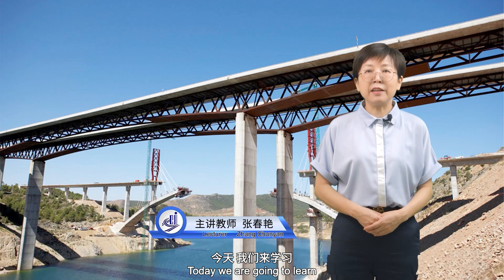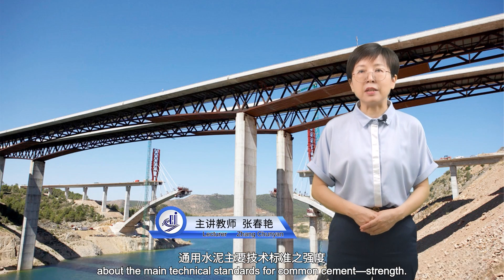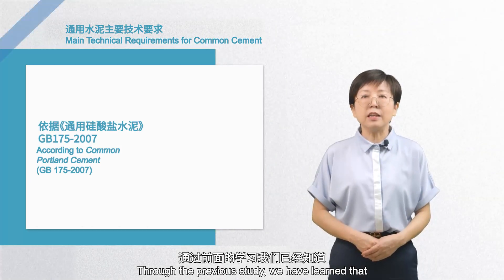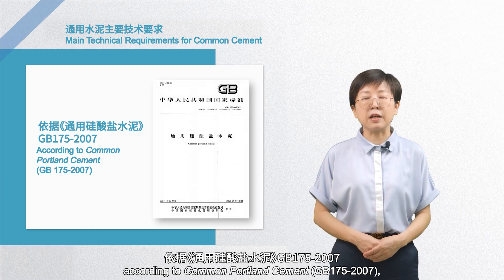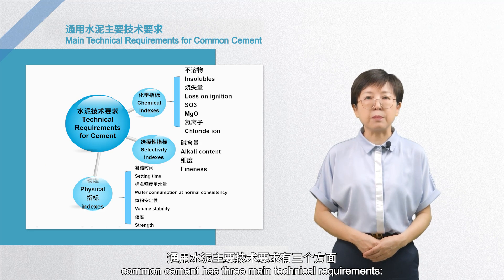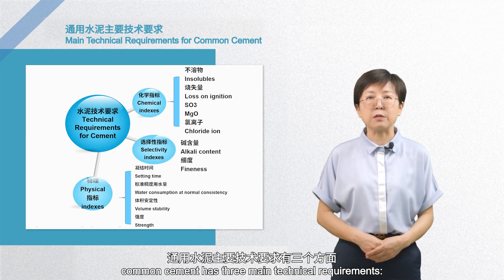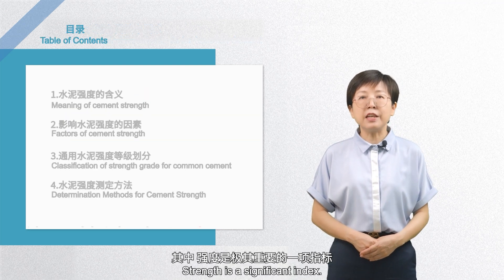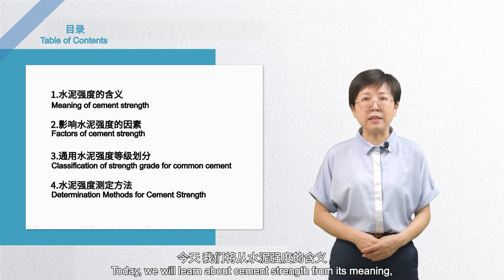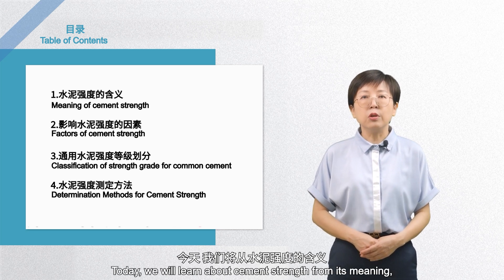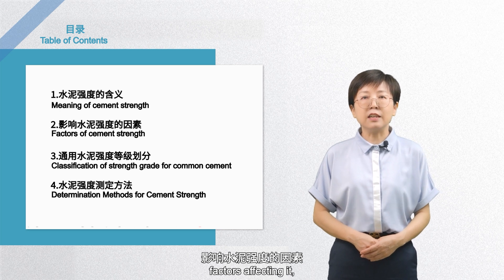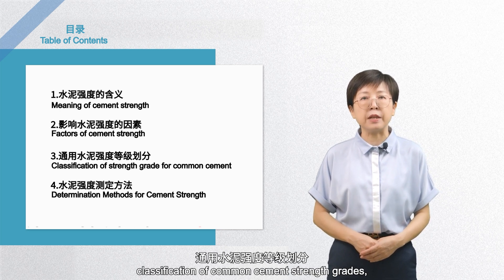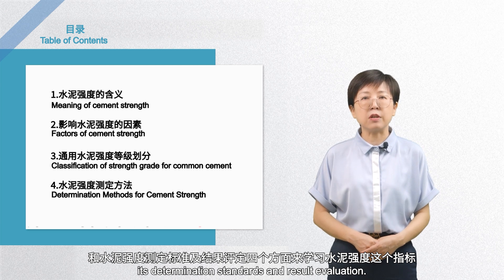Hello, everyone. Today, we are going to learn about the main technical standards for common cement – strength. Through previous study, we have learned that according to Common Portland Cement GB175-2007, common cement has three main technical requirements: chemical index, physical index, and selectivity index. Strength is a significant index. Today, we will learn about cement strength from its meaning, factors affecting it, classification of common cement strength grades, its determination standards, and result evaluation.